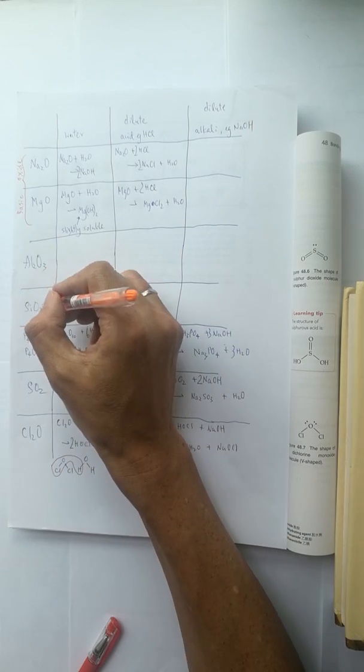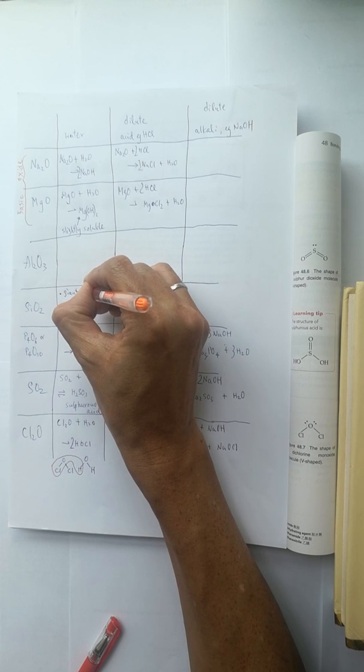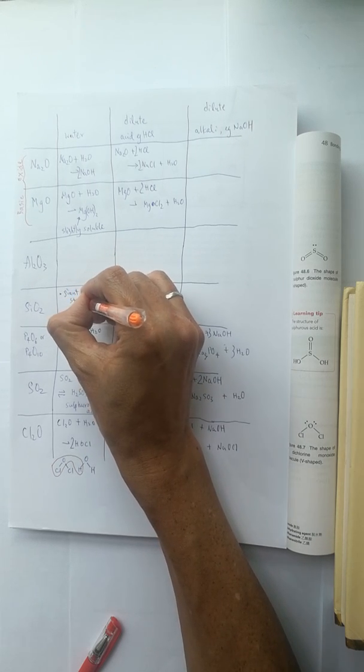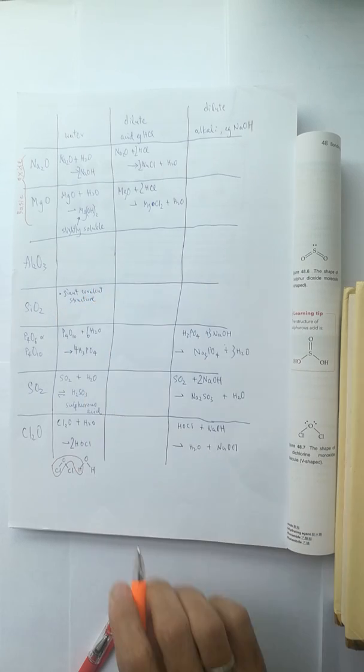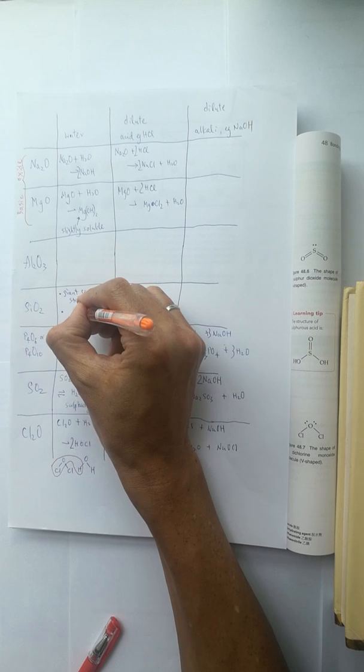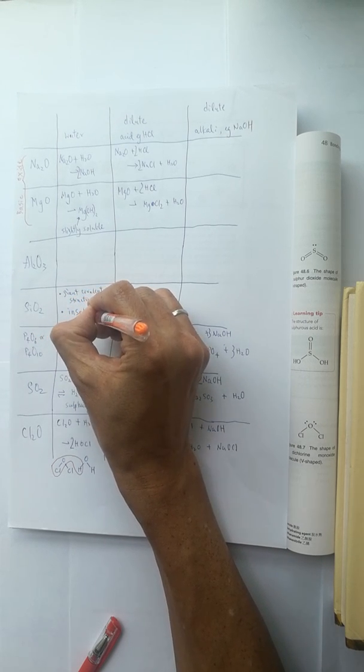However, the SiO2 has a giant covalent structure with a lot of strong covalent bonds between the atoms. It is not soluble in water.